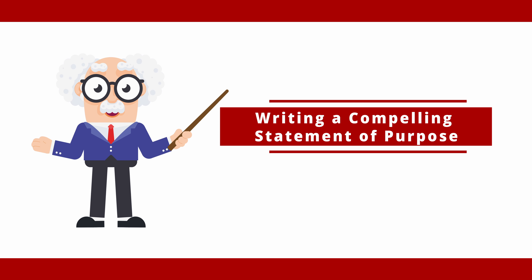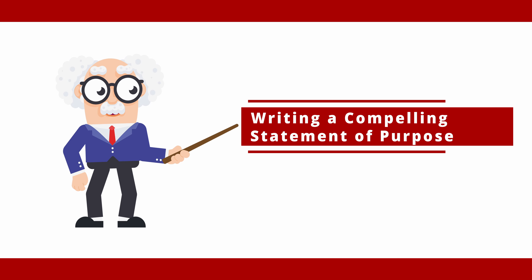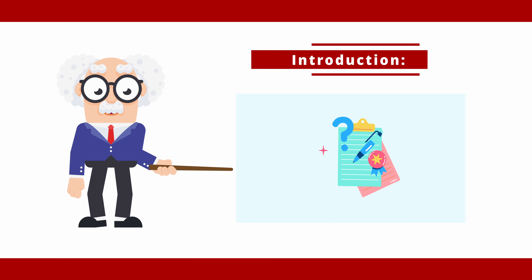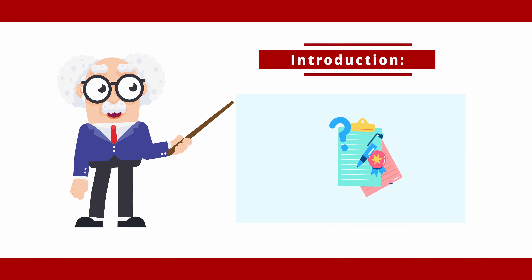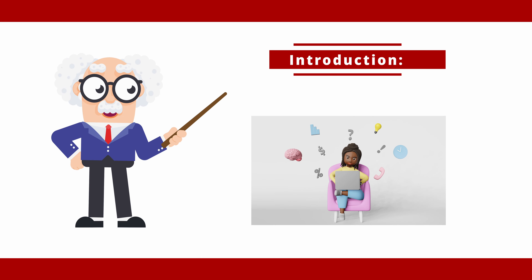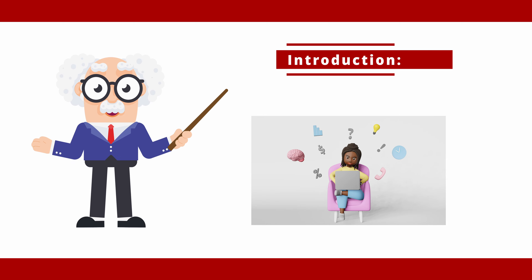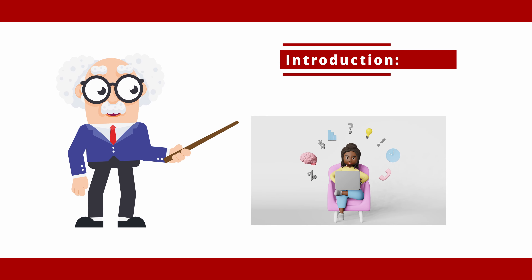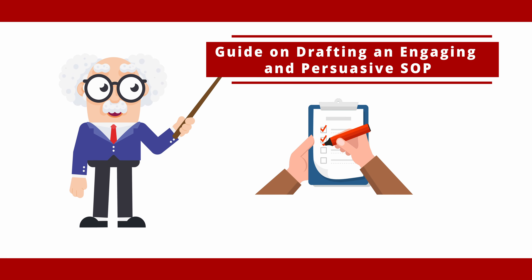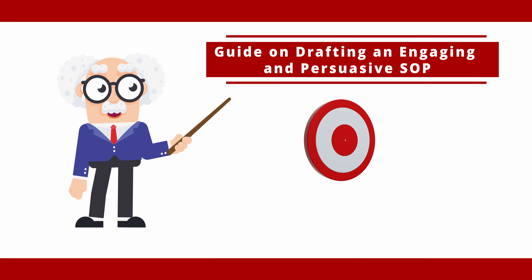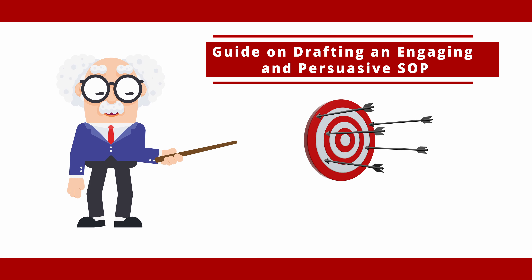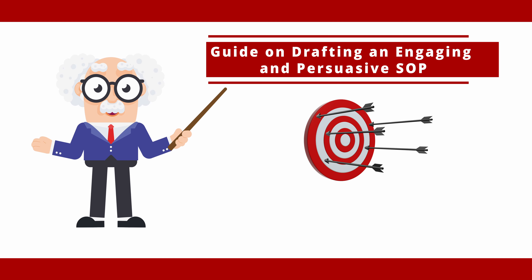Writing a compelling statement of purpose letter for your studies. A statement of purpose, also known as a SOP, is a critical document to add to your application for a university program. It's your chance to explain yourself, your aspirations, and your qualifications beyond grades and standardized test scores. It also gives you an opportunity to explain why you want to study a particular course at that institution, and what your longer-term career plans are after you complete your studies in Australia.